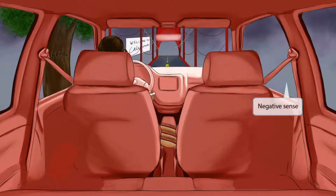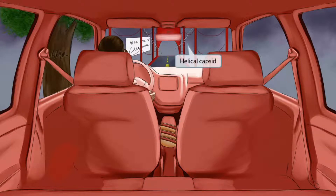Notice that we've shown a lot of rain clouds outside of the car, which should help you remember that this is a negative sense virus. Just think of the negative vibes associated with a gloomy rainy day. Now if you look closely at the bridge, you can see some stray helical shaped wires that must have broken loose during the rainstorm. These helical shaped cables are here to help you remember that California encephalitis virus has a helical capsid.